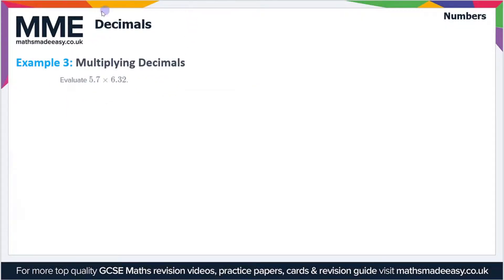Welcome to the Maths Made Easy tutorial on decimals. In this video, we'll be covering a couple more example questions starting off with a multiplying decimals question. So evaluate 5.7 times 6.32. Let's write this out up here.